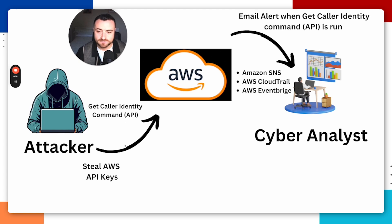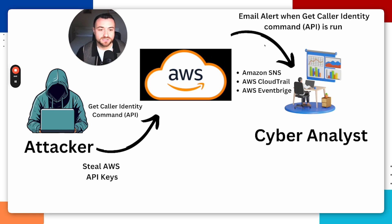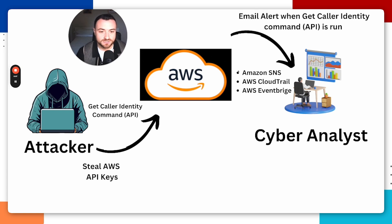Since we know that attackers who steal API keys will often run this command, what we'll want to do is generate an email alert to notify us anytime this command is executed and this API is run. This will alert us as a cybersecurity analyst. What we're going to use to generate that alert is Amazon SNS, Amazon CloudTrail, and AWS EventBridge. Now I'm going to show you how to set this up.